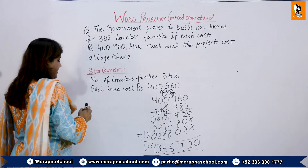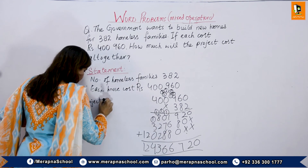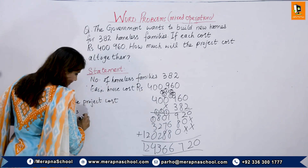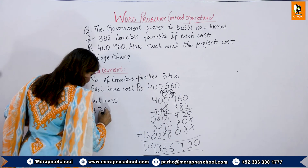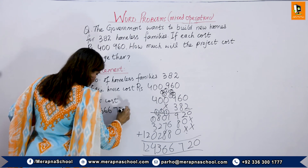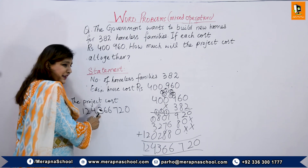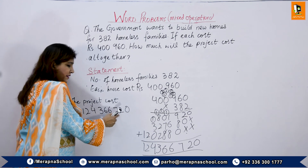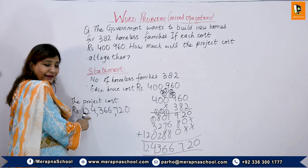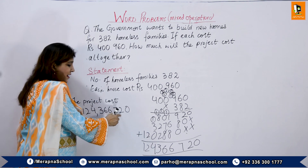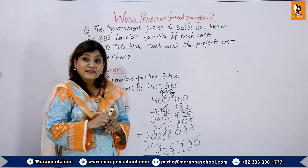How much will the project cost? The project cost is rupees 124,366,720. We place commas after every 3 digits from the right and read it as one hundred twenty-four million, three hundred sixty-six thousand, seven hundred twenty. That is the total cost of the project.